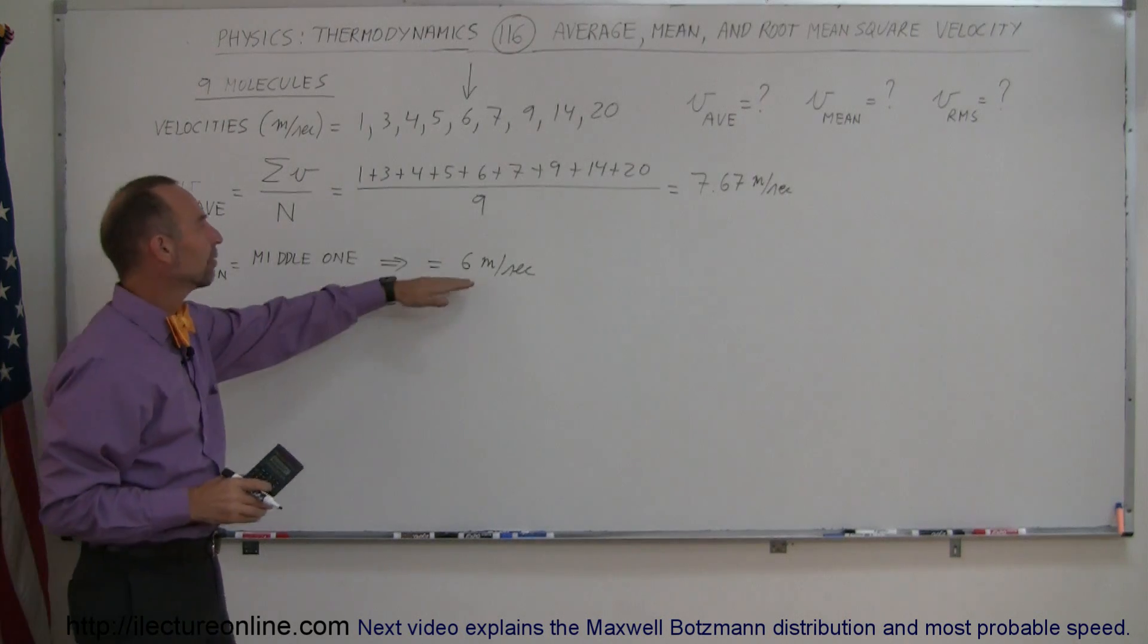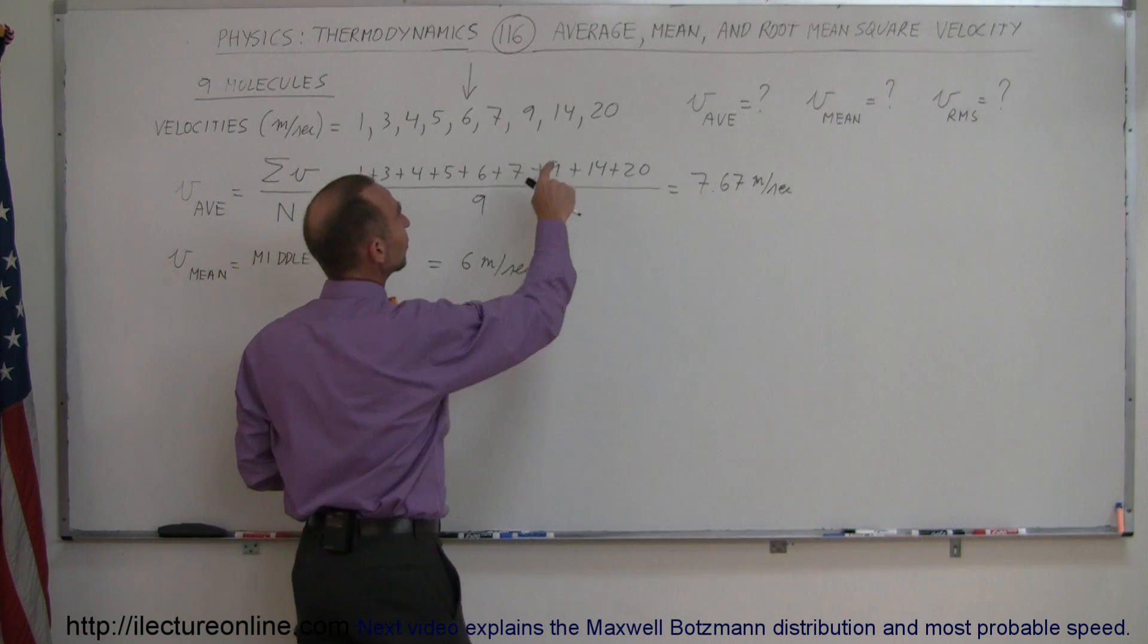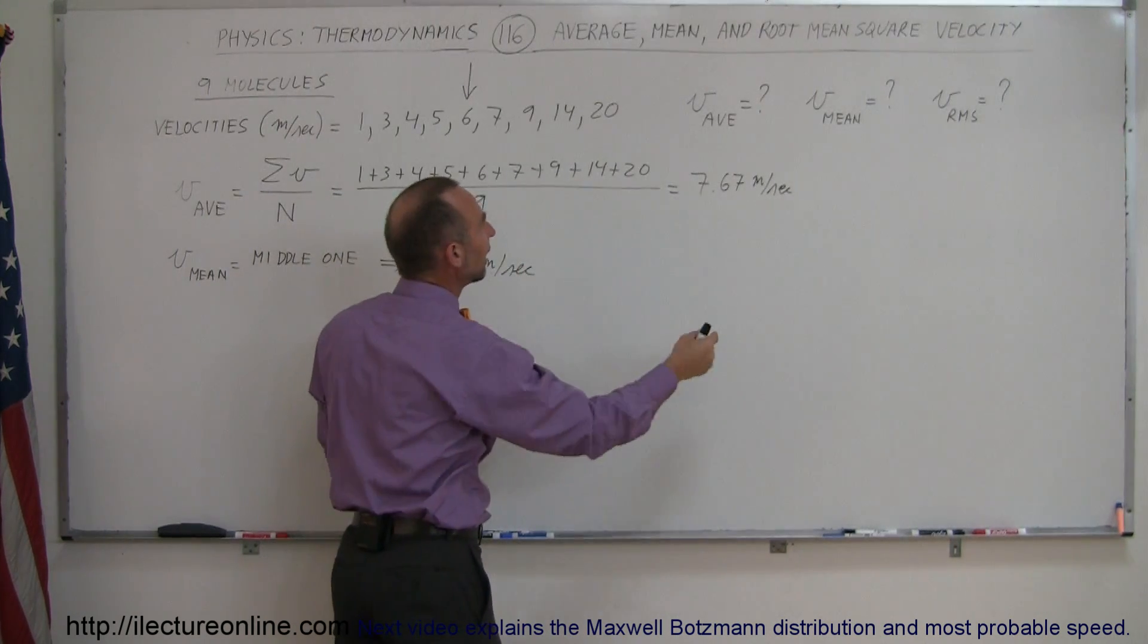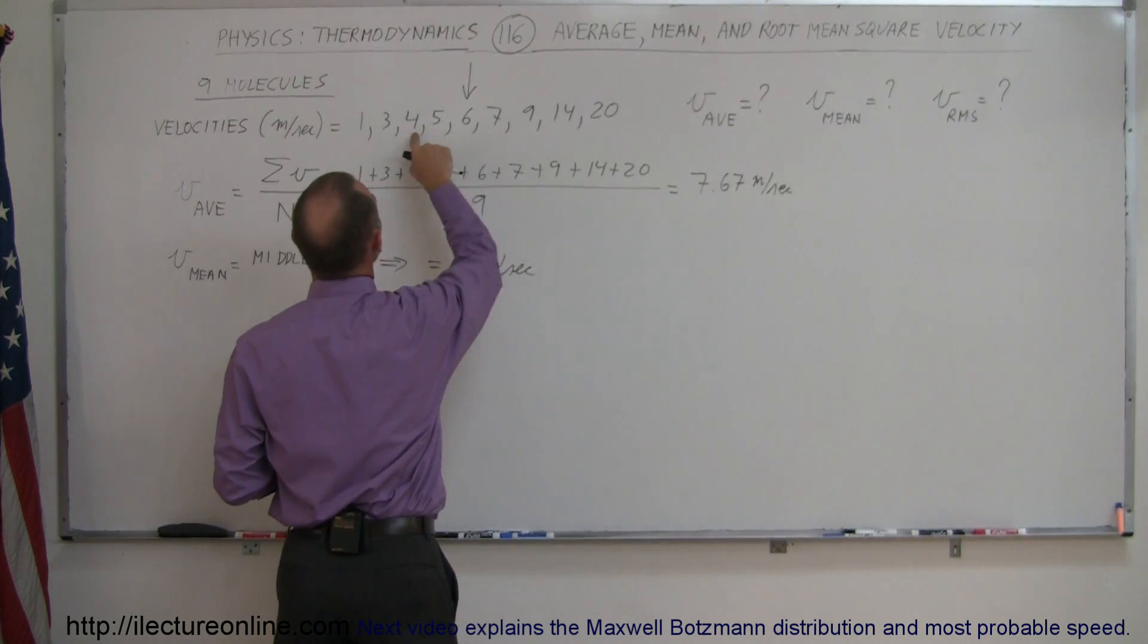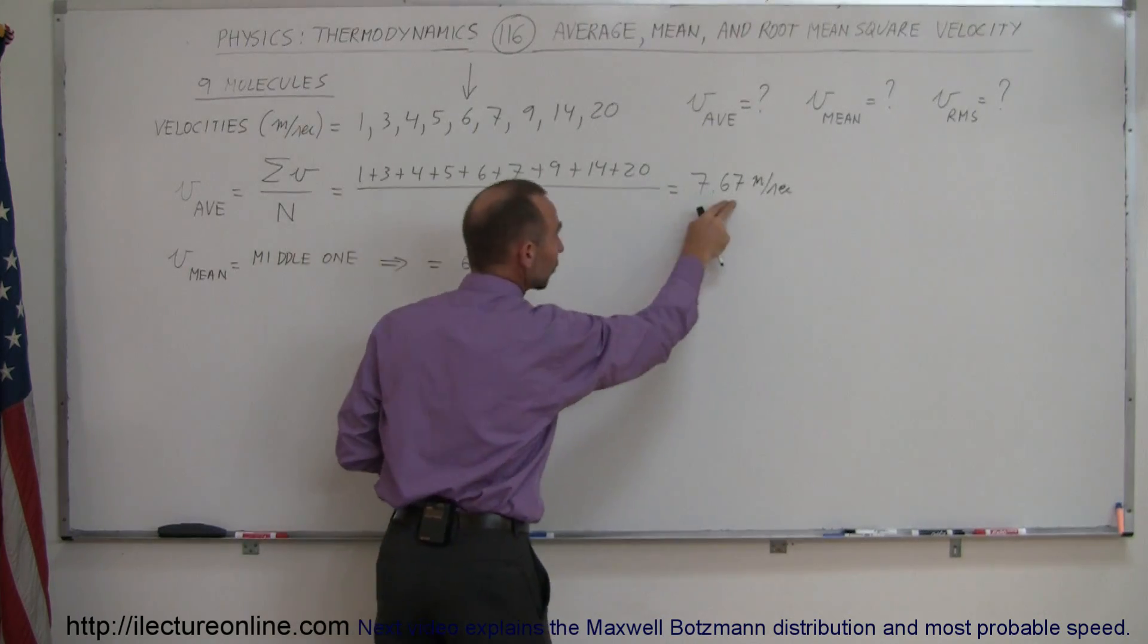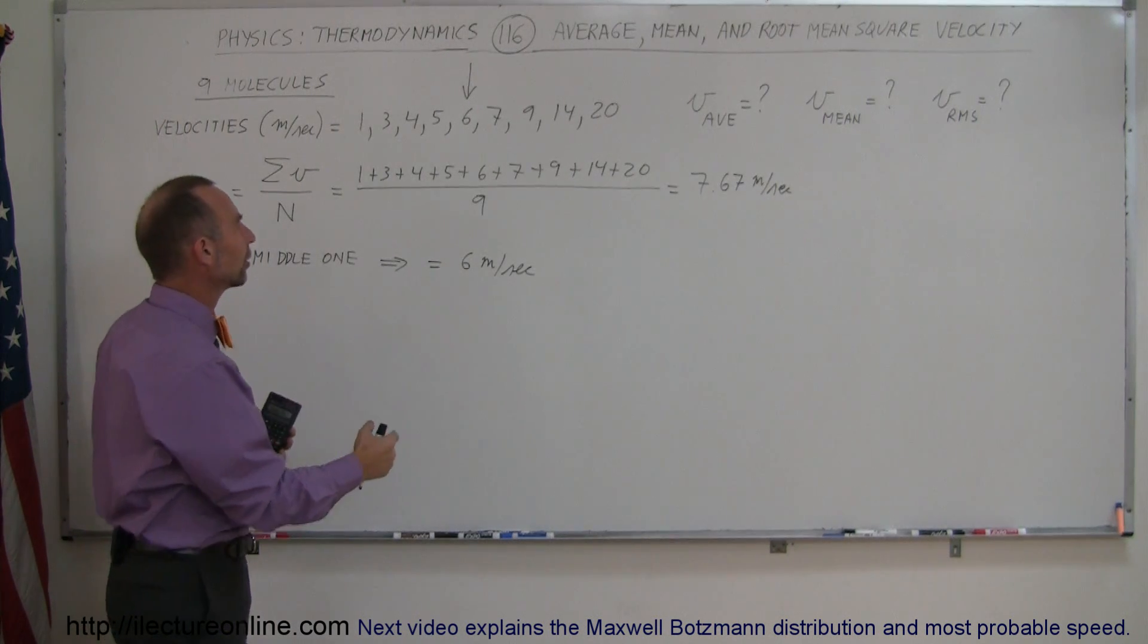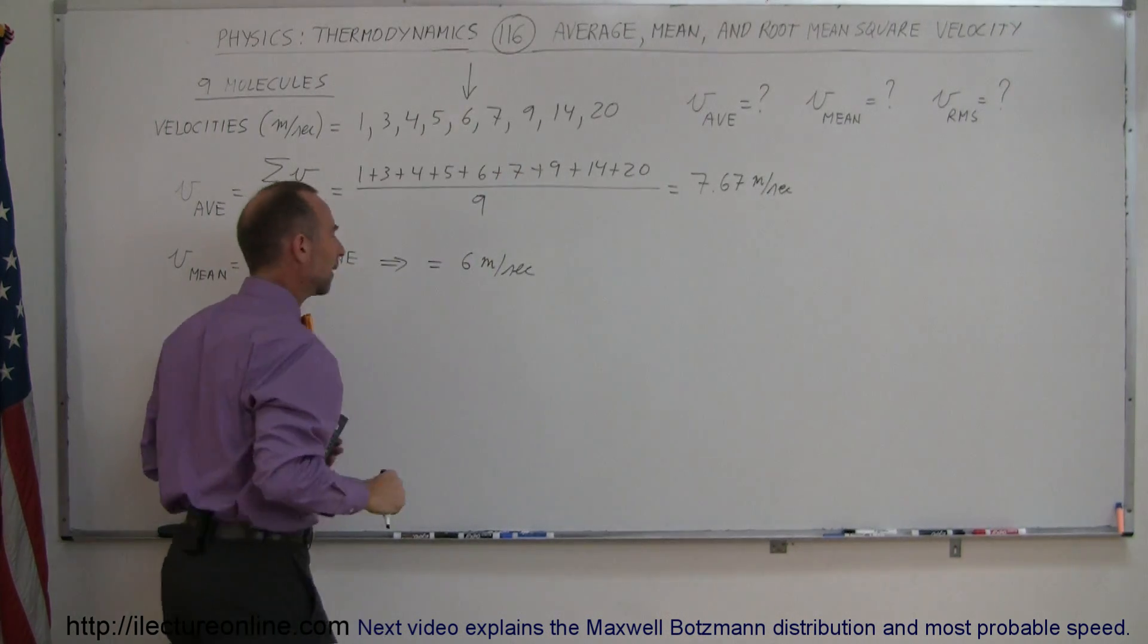Now, why is the mean velocity smaller than the average velocity? Notice that there's two molecules that have a significantly larger velocity. And they throw off that average that causes the average to skew to the right and gives you a larger average velocity. Even though there are six molecules that have a smaller velocity than that, and only three that have a larger velocity, that is still the average of the nine. The mean sometimes is a better representation of the typical velocity of a molecule because this is much closer to the vast majority of molecules right there.